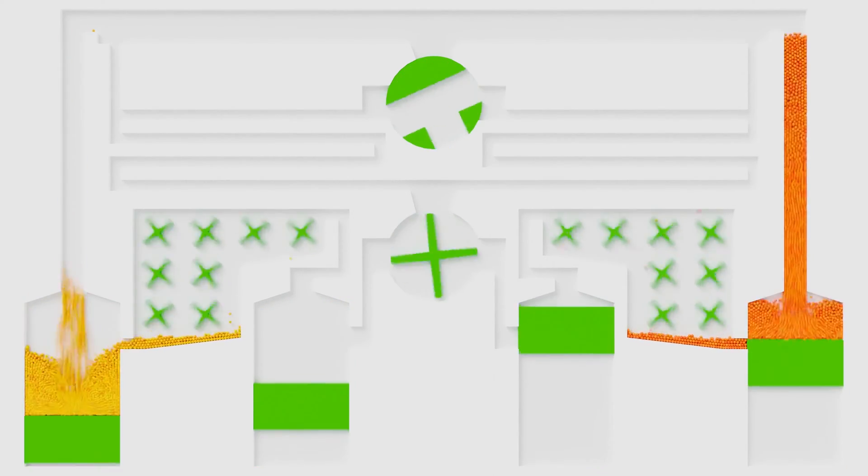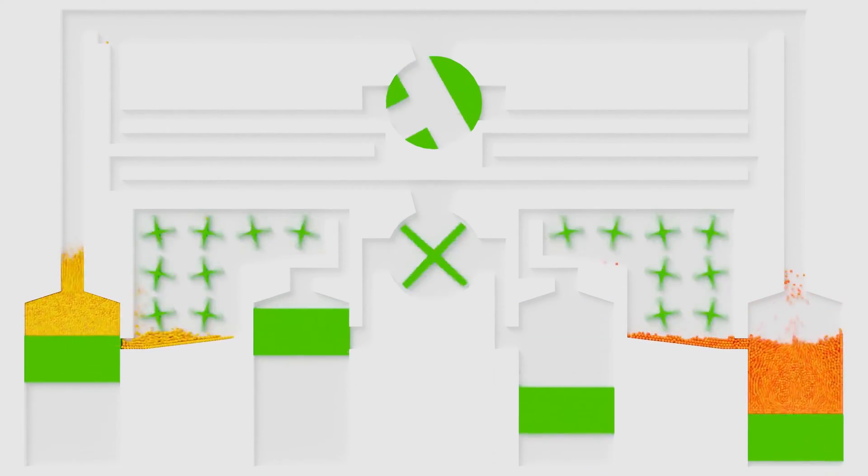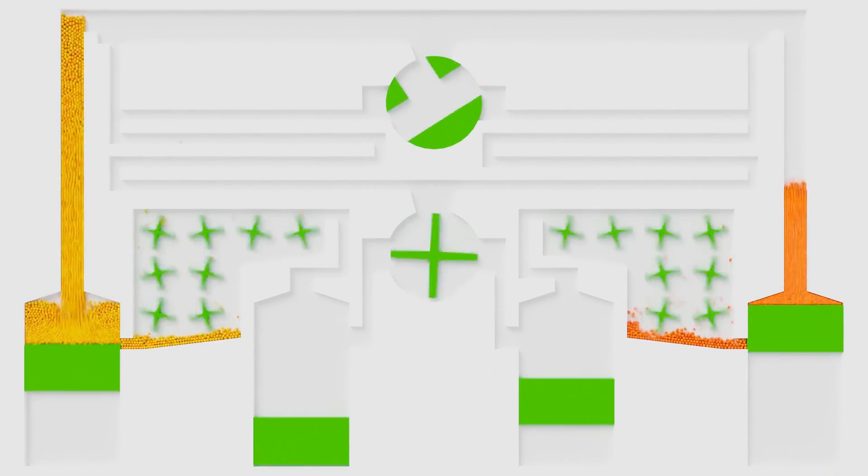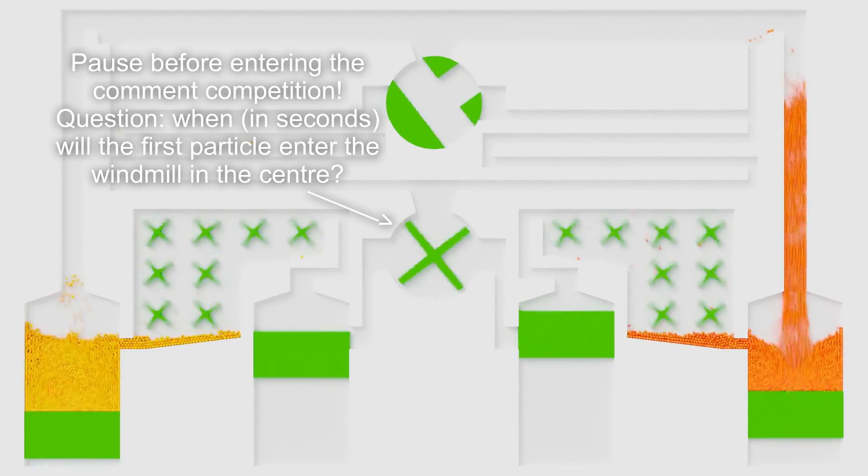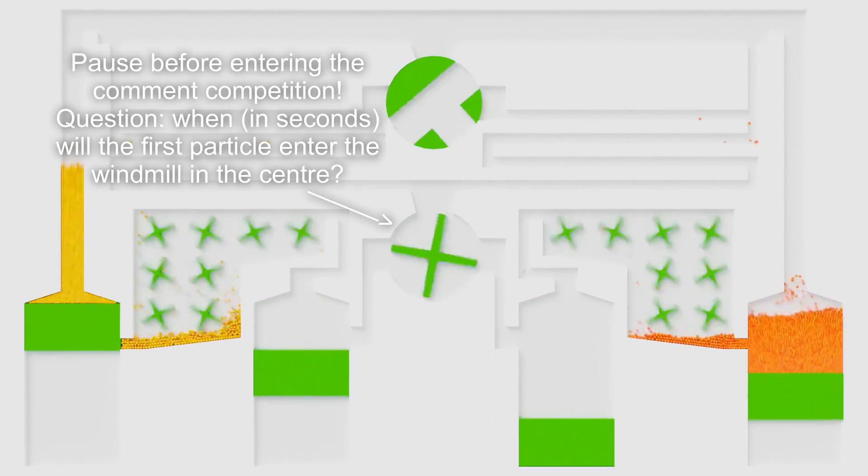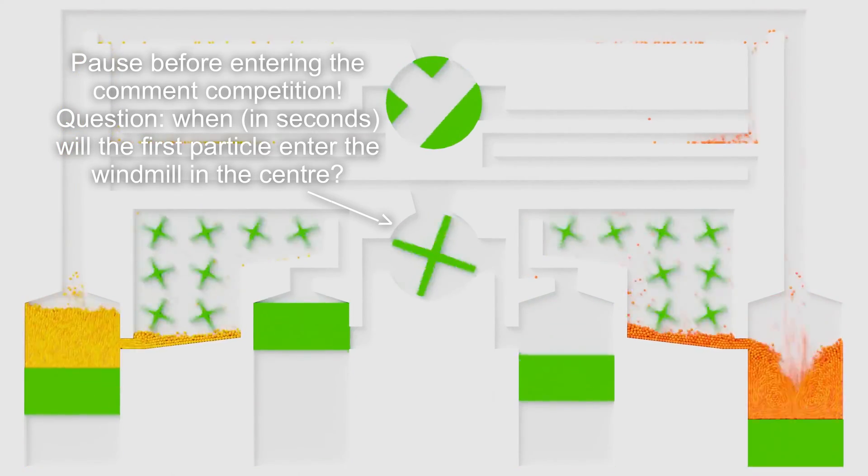So the question is: when does the first particle hit the windmill in the middle — the one which the arrow is pointing to?